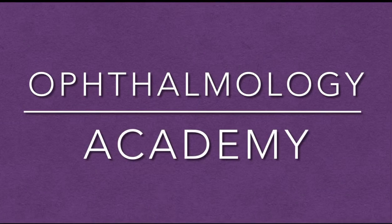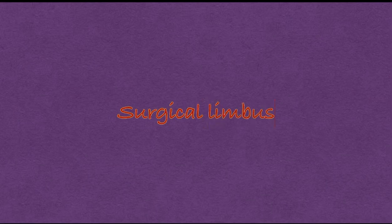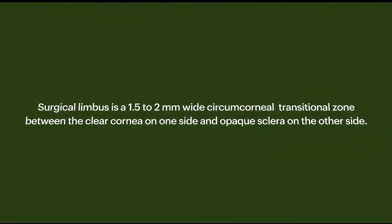Hello friends, welcome to my channel Ophthalmology Academy. Today we are going to discuss a very important concept: the surgical limbus. It is a 1.5 to 2 millimeter wide circumcorneal transitional zone between the cornea on the anterior side and the sclera on the posterior side. It needs a fair bit of demonstration.